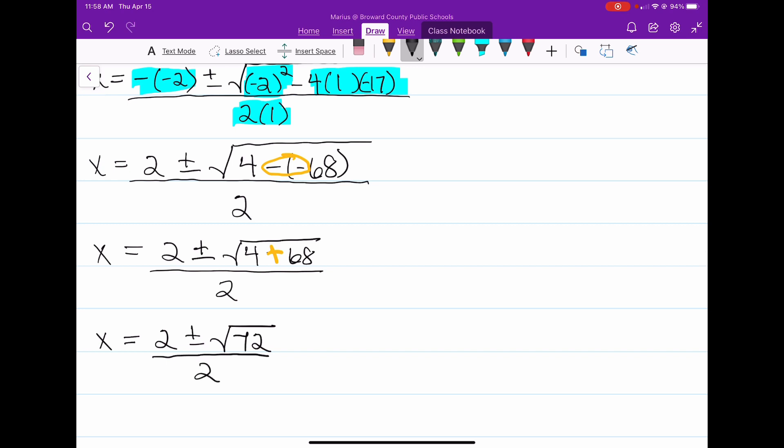Now, the only other thing we need to do here is simplify the square root of 72. We've got to simplify this. Once again, we are going to factor it, and we end up with the square root of 9 times the square root of 8. Well, the square root of 9, that's a perfect square. That's 3.